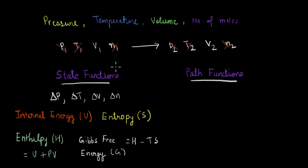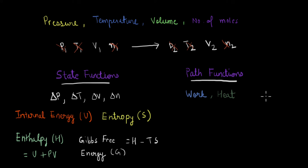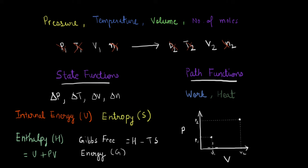Internal energy, entropy, enthalpy, and Gibbs free energy are all state functions — they only depend on the initial and final state. On the other side, we have path functions. The most common examples are work and heat. To see how these are path functions, consider going from an initial state P1, V1 to a final state P2, V2. On a PV diagram — a graph of pressure versus volume — the initial state is one point and the final state is another, with both pressure and volume increasing.